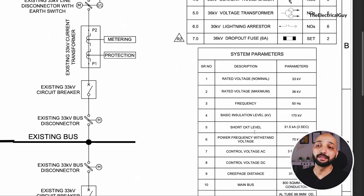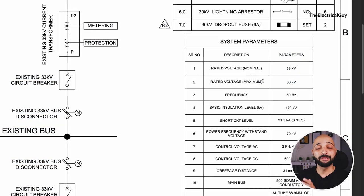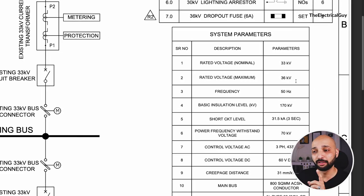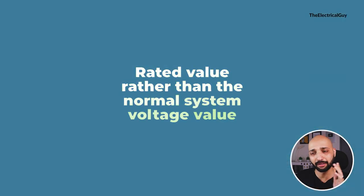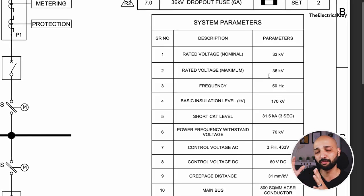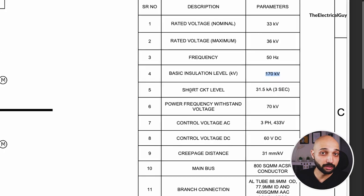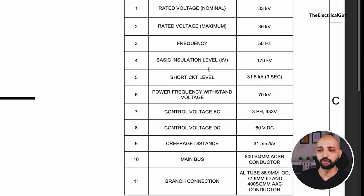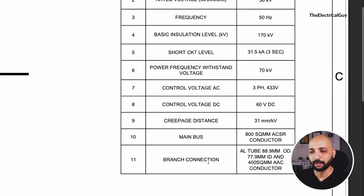The system parameters are also mentioned here. The rated nominal voltage is 33 kV and the rated maximum voltage is 36 kV. The nominal voltage of 33 kV is what will normally remain in the system, but the system is rated for 36 kV. It is always good practice to refer to a system voltage by its rated value — for example, 132 kV becomes the nominal value and 145 kV becomes the rated system voltage. The frequency is 50 Hz, the basic insulation level is 170 kV, the short circuit level is 31.5 kA, and the power frequency withstand voltage is 70 kV. Control voltage AC and DC, creepage distance, and details of main bus and branch connections are also given.